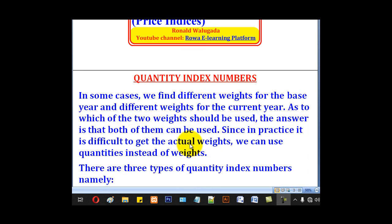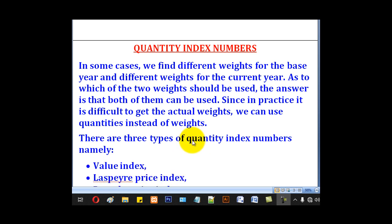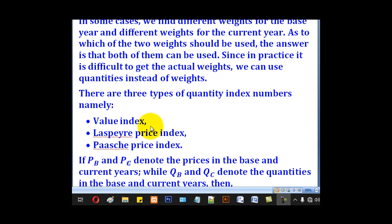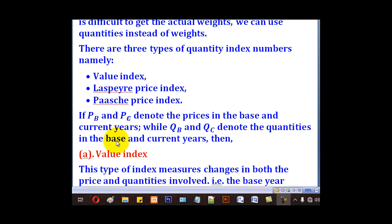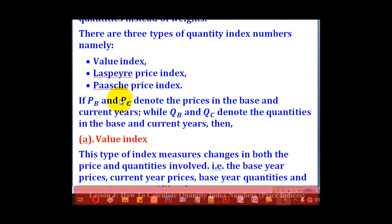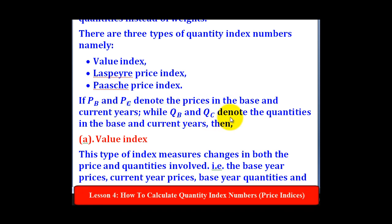In quantity index numbers, we use quantities instead of weights, as seen in the previous lesson on weighted index numbers. There are three types of quantity index numbers: namely the value index, Laspeyre's price index, and Paasche price index. If PB and PC denote the prices in the base and current years, while QB and QC denote the quantities in the base and current years...